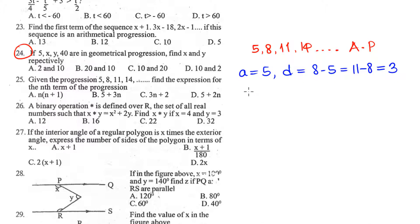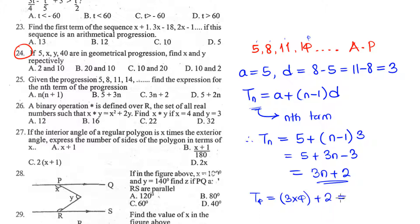The formula for the nth term, generally for an AP, the nth term tn is a plus n minus 1 times d. a is the first term, n is the number of terms, d is the common difference. If you want to input the values of a and d, that is 5 plus n minus 1 times 3. That will be 5 plus 3n minus 3. When we open the brackets, 5 minus 3 is 2. So, we have 3n plus 2. And that is our solution. We can check, the fourth term, 3 times 4 plus 2, that's 12 plus 2, which is 14. And that is our expression for the nth term, 3n plus 2.